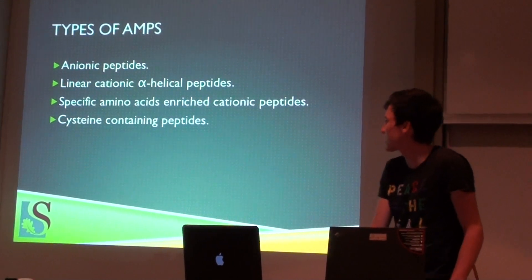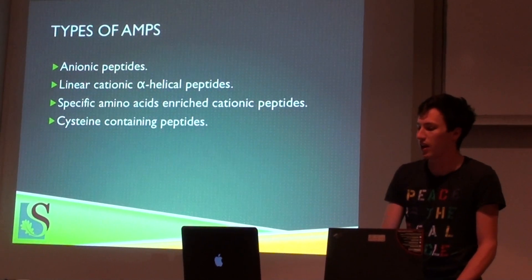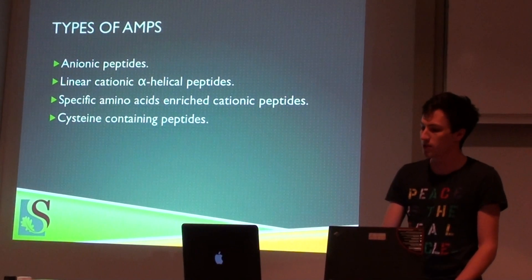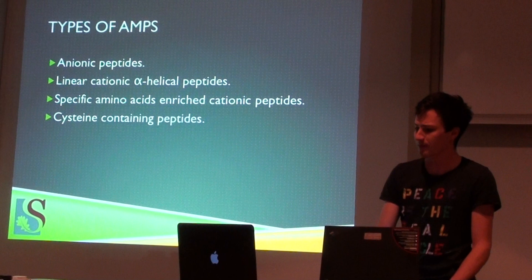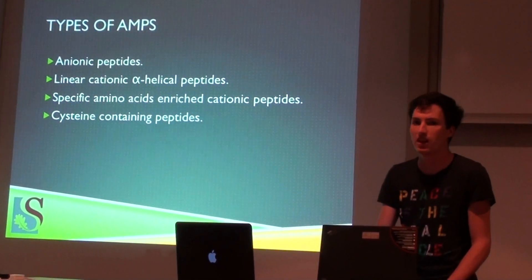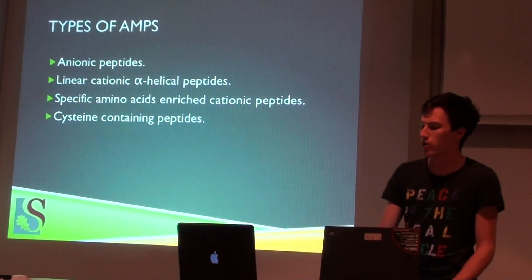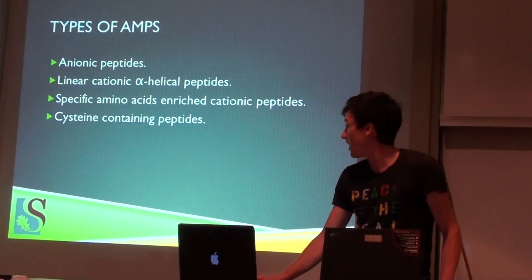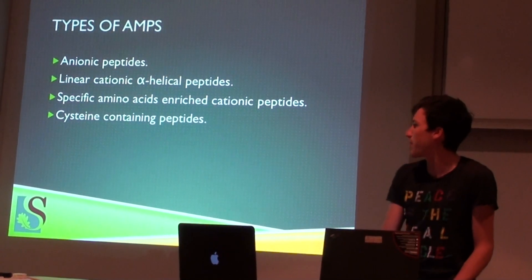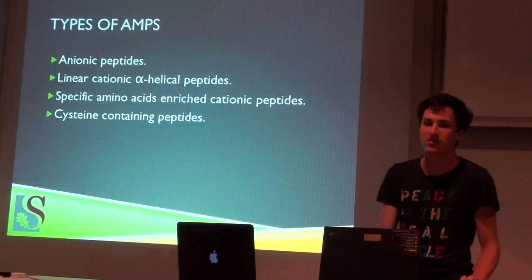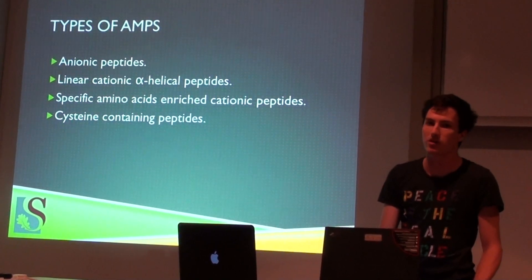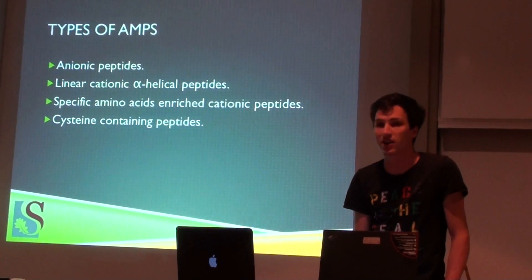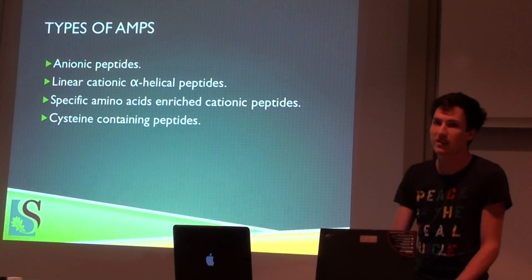Then you have the acidic amino acid-enriched cationic peptides. These characteristically contain amino acids like proline, arginine, phenylalanine, tryptophan and glycine. An example is indolicidin, which was used in the co-treatment of staph infections. Then you get the cysteine-containing peptides, which characteristically contain cysteine or disulfide bonds, usually one to three of them. An example is tachyplesin, which is found in horseshoe crabs and is used in viral inactivation.